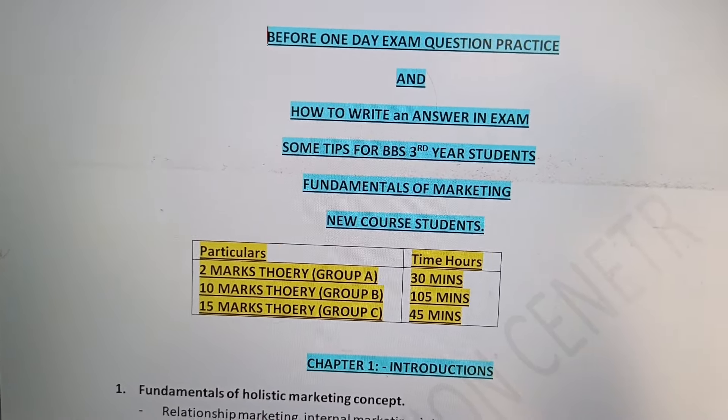If you have any tips for the day, you will need to learn more. This is for new course students. In the exam, which is three hours long, the 2-mark theory has a Group B worth 20 marks.